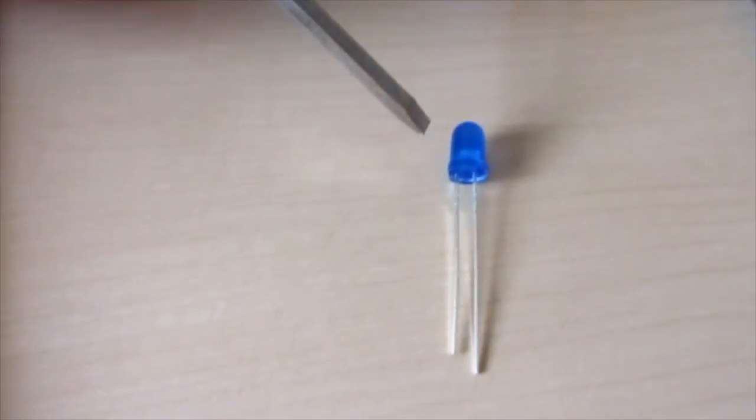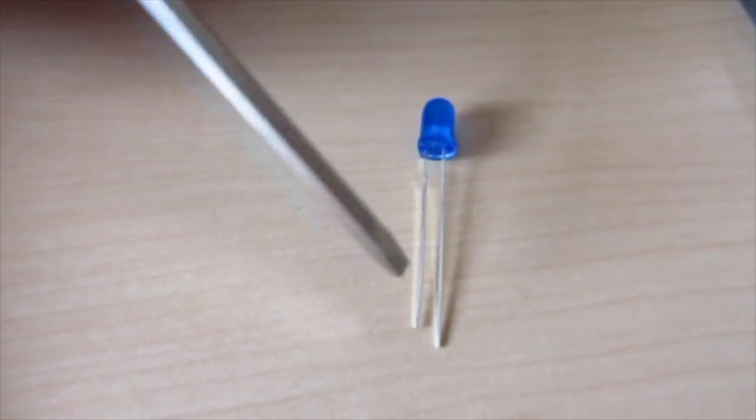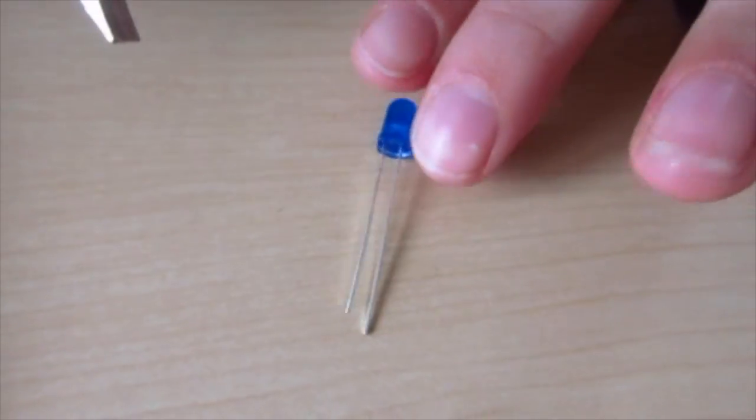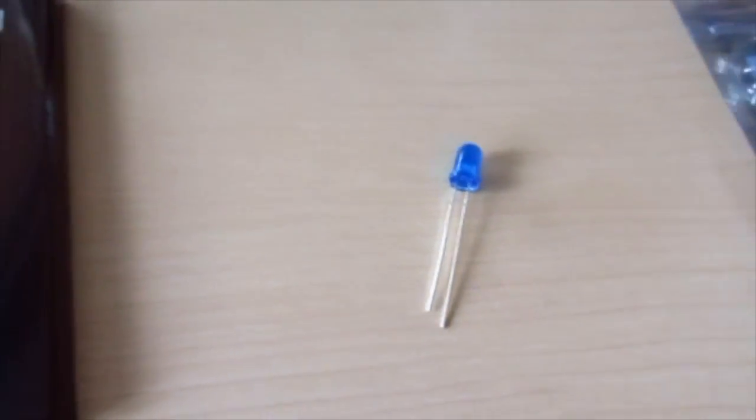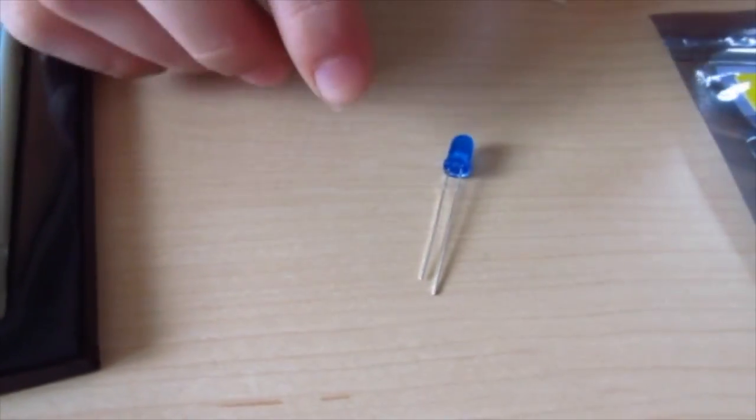Next, we're going to look at the LED, the light emitting diode. You can tell that there is a long end and a short end to your LED light. The long end is the positive section and the short end is the negative section.